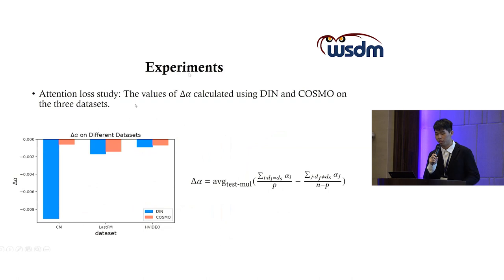Here comes the attention loss study. The value of delta alpha is calculated using DIN and COSMO on the three datasets. The method to calculate alpha is the sum of the attention scores with the same device ID minus the sum of the attention scores with different device IDs. We can see that the delta alpha of COSMO is higher than the delta alpha of DIN because we increase the attention scores of historical behaviors with the same ID.